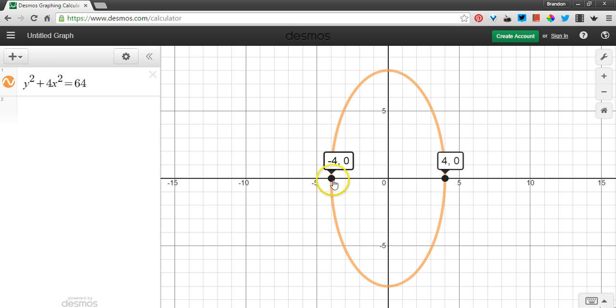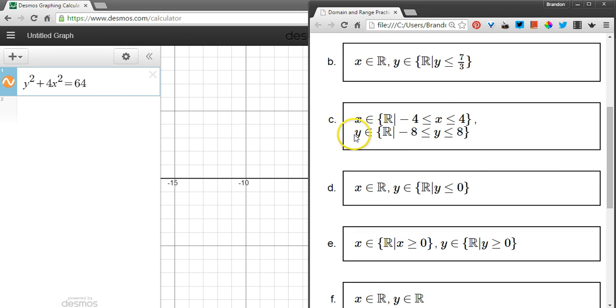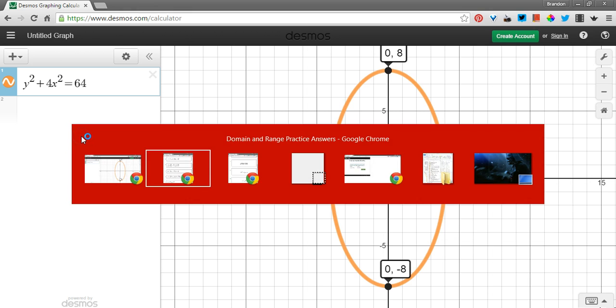And for y, the y values, the biggest y value I can get is 8, the smallest one is negative 8. And so in my answers, I have the very same kind of setup. y is an element of the real numbers such that negative 8 is less than or equal to y, which is less than or equal to positive 8.